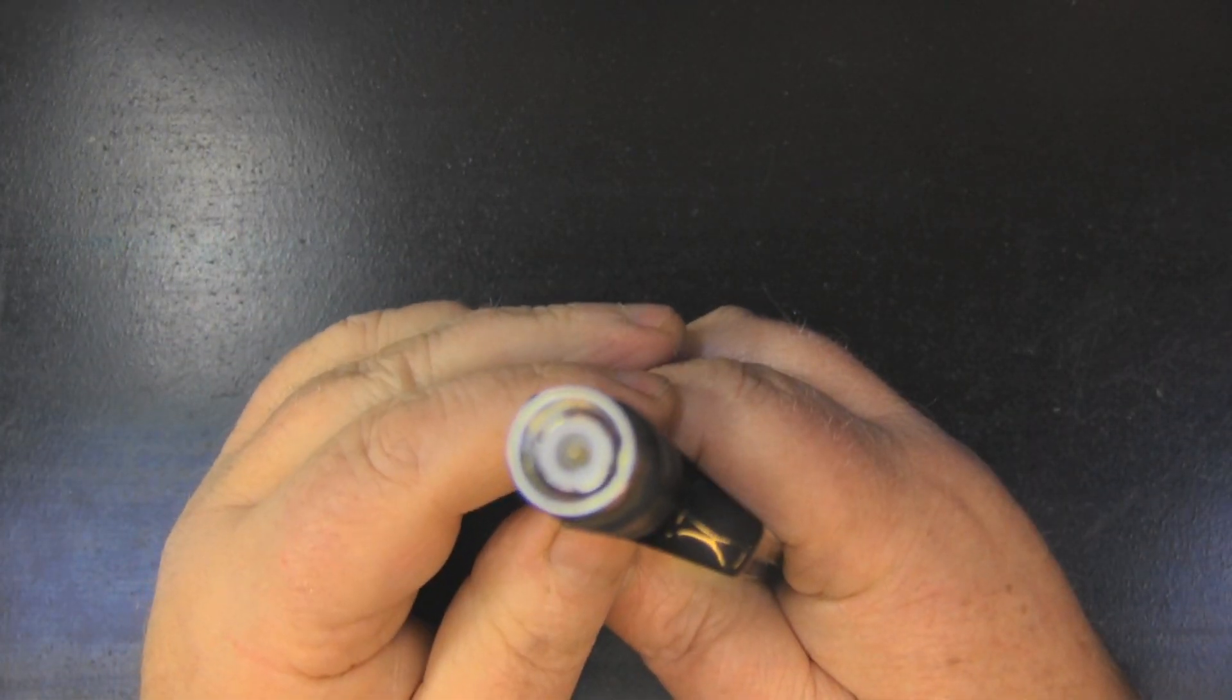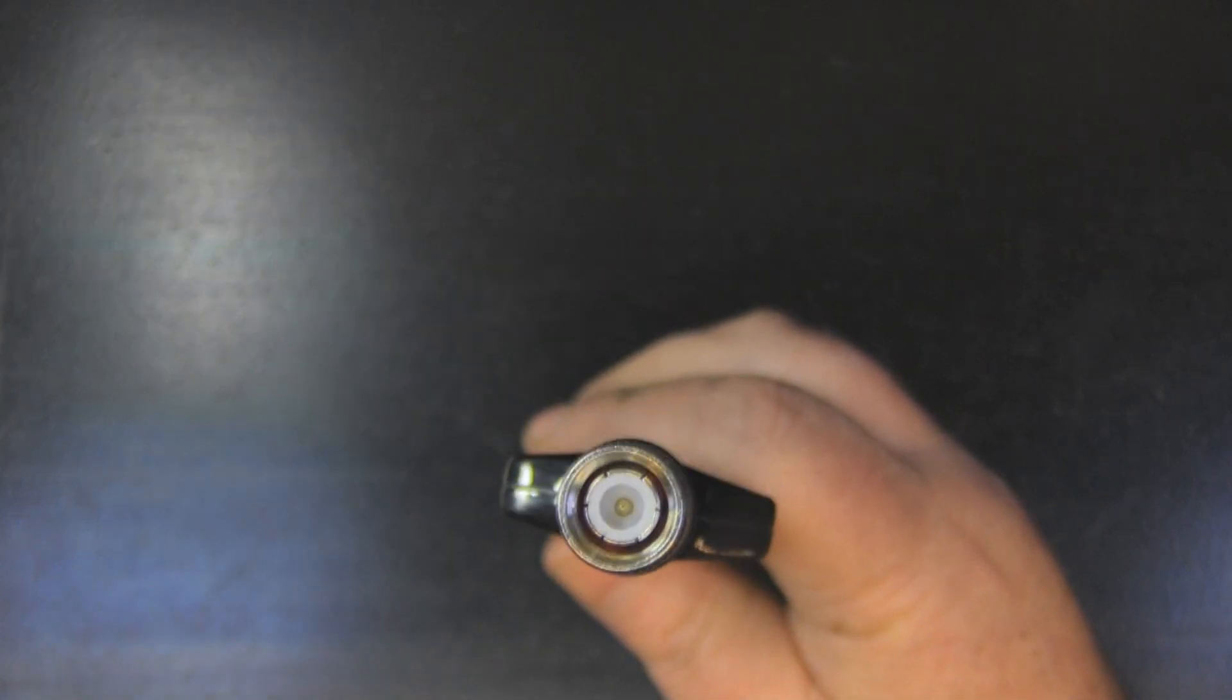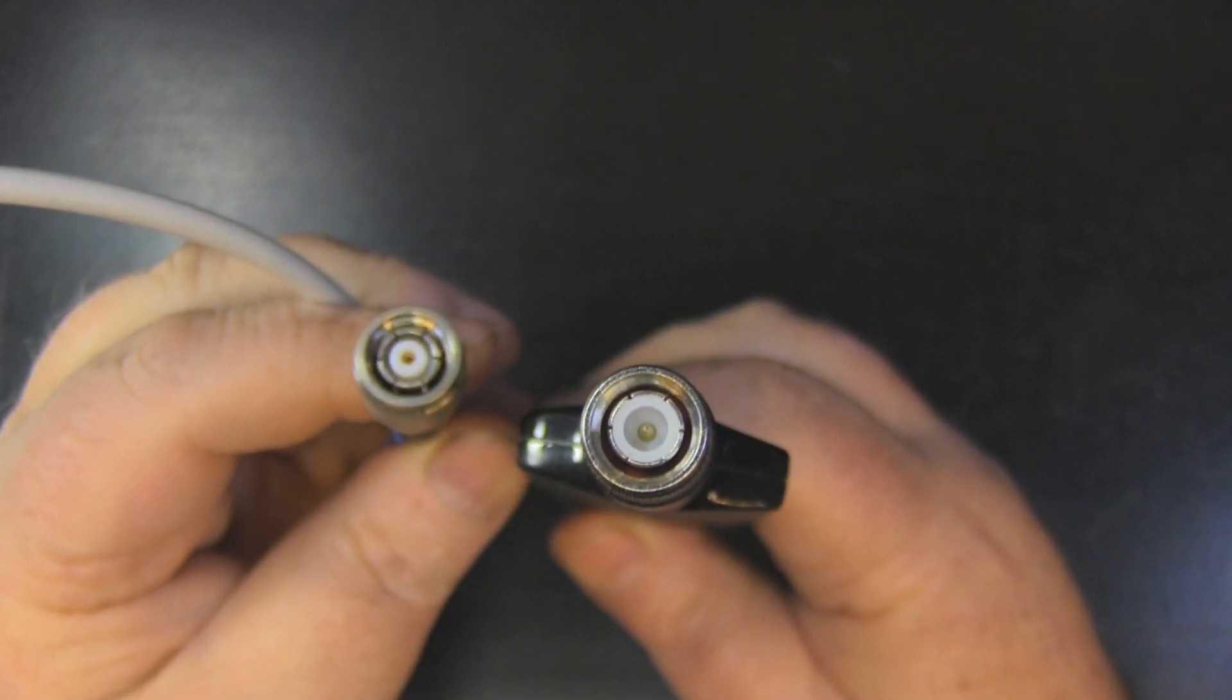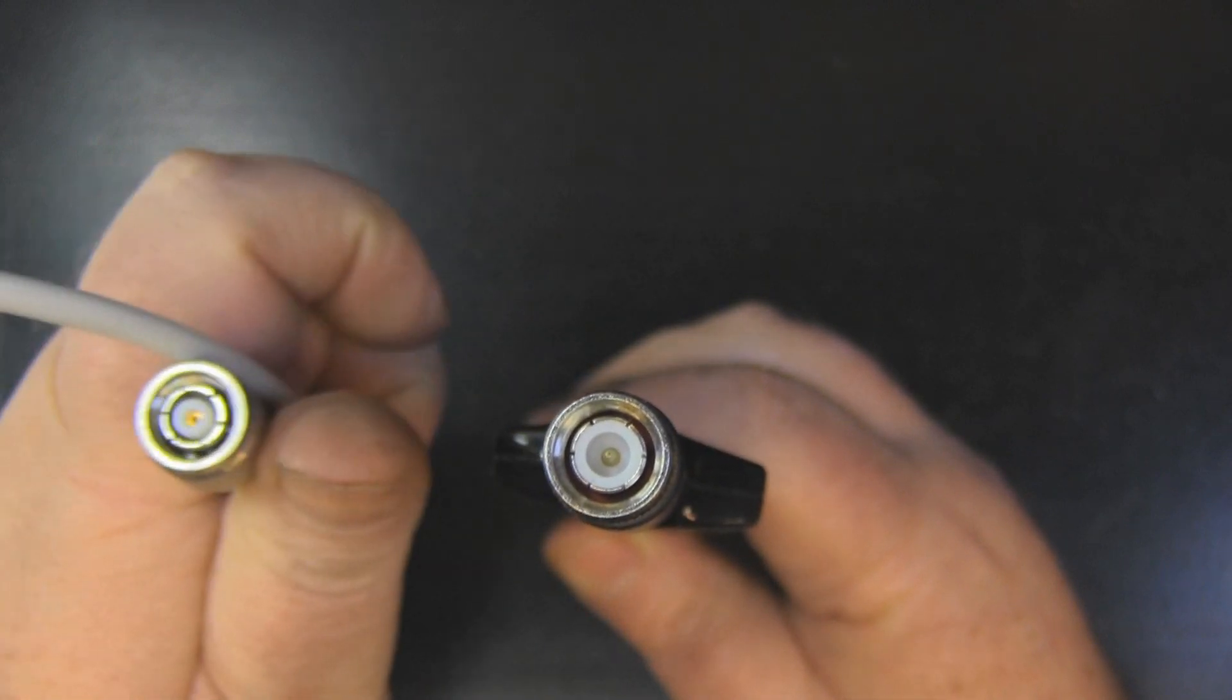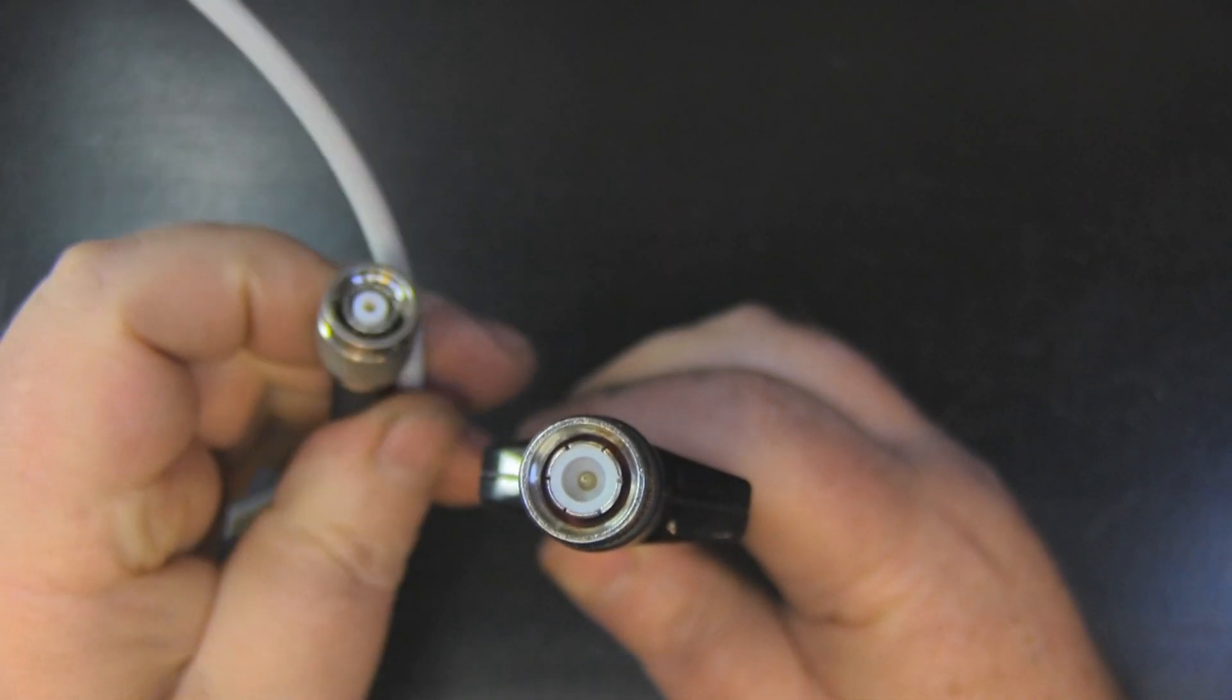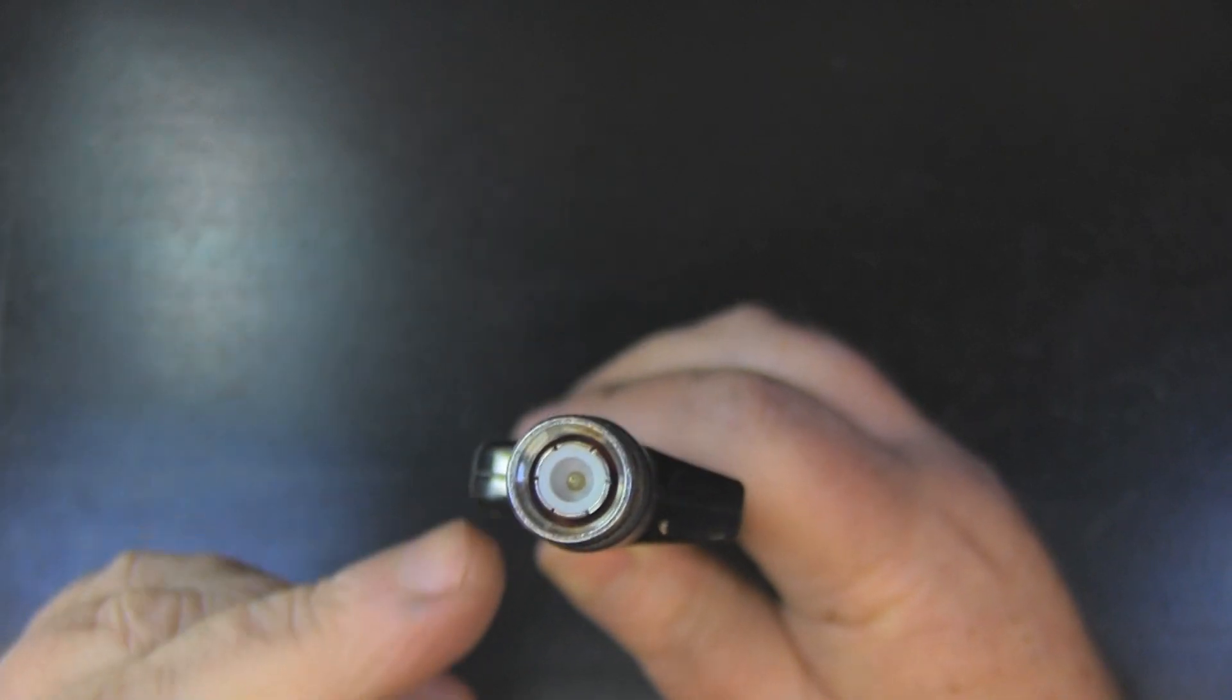One thing I do want to note is most of the Ciscos we've taken a look at have had a female connection like this one here, but this one is male, a little sticky out bit there instead of the sticky inner bit. This is the first time I've seen a Cisco antenna with this connector.